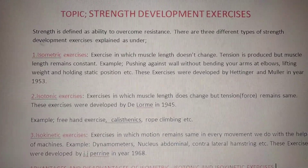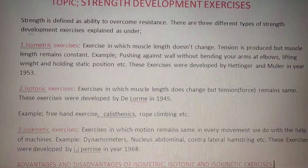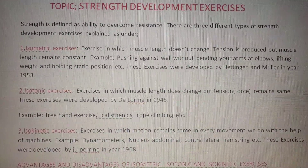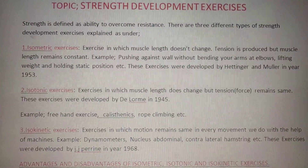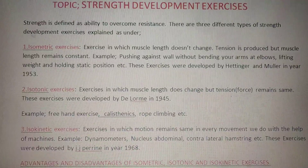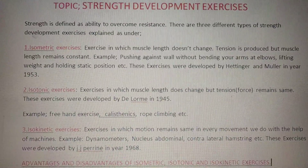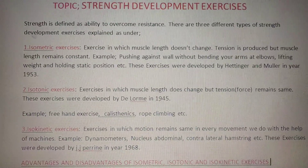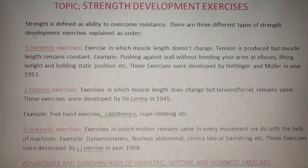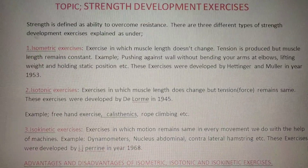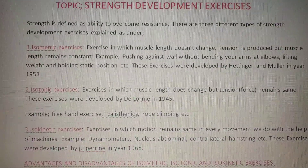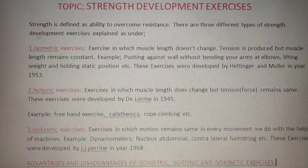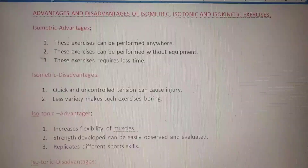Isokinetic exercises are exercises in which motion remains the same in every movement we do, with the help of machines. Examples include dynamometers, nucleus abdominal, contralateral hamstring, etc., performed with the help of machines. These exercises were developed by J.J. Perrine in the year 1968.